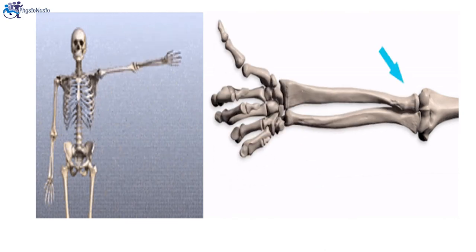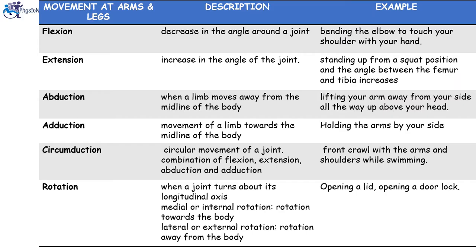Here the joint is going into a supination position, and now pronation. We are going to study the movements which occur at arms and legs. Flexion is a decrease in the angle around the joint — for example, bending the elbow to touch your shoulder with your hand. Extension is an increase in the angle of the joint — when you stand up from a squat position, the angle between the femur and the tibia increases. Abduction: when the limbs move away from the midline of the body — for example, when you lift your arm away from your side all the way up above your head. Adduction: movement of a limb towards the midline of the body — for example, when you hold your arms by your side. Circumduction is a circular movement of a joint which is a combination of flexion, extension, abduction, and adduction.